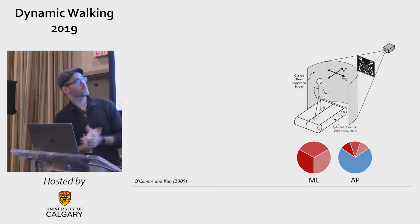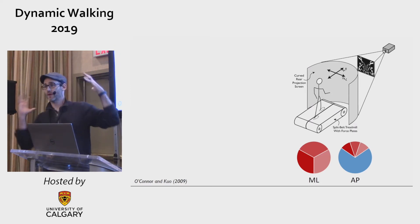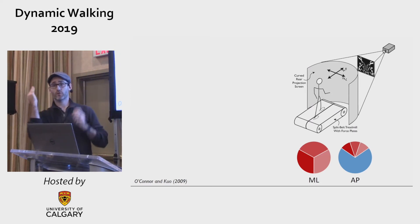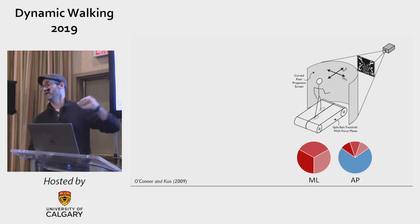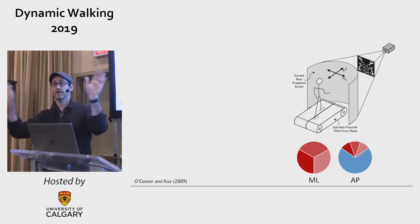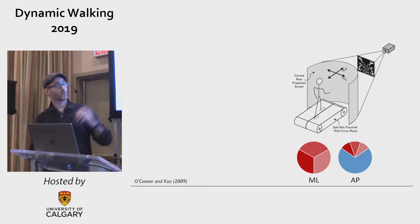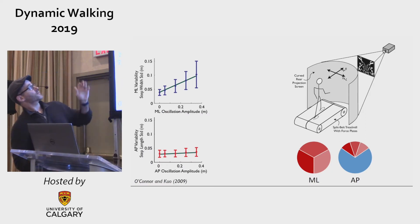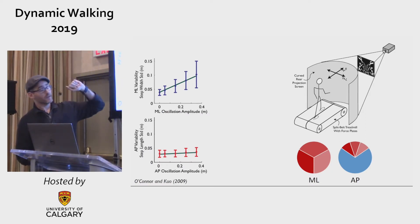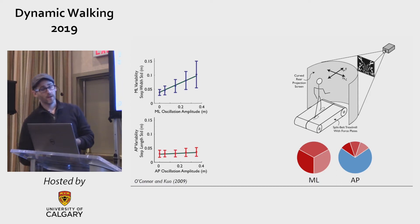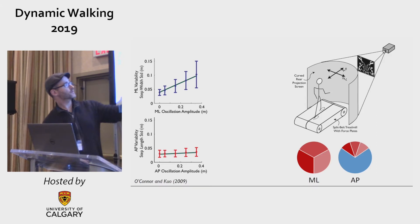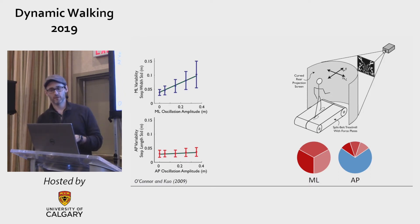Ten years ago, Art and I wanted to test this. We put a person on a treadmill in a virtual reality environment and perturbed the environment in different directions. The thought was: if they rely heavily on active feedback in the medial-lateral direction, medial-lateral visual perturbations should produce lots of adjustments in step width; if they can rely on passive stability in the AP direction, they may be less sensitive to AP perturbations and adjust step length less. What we found: on the upper left, as we increased medial-lateral perturbation amplitude, they adjusted their step width variability significantly.